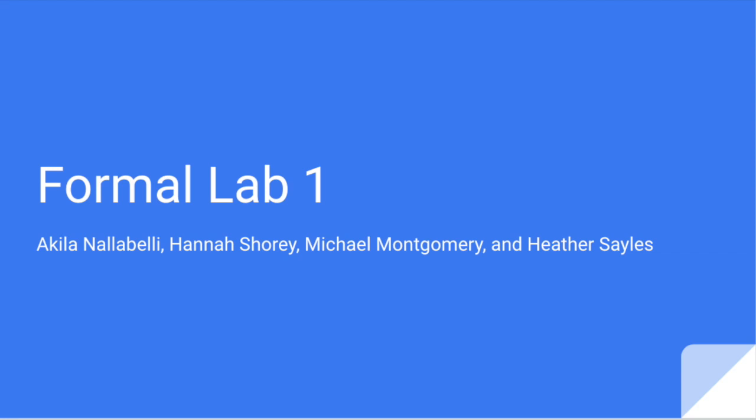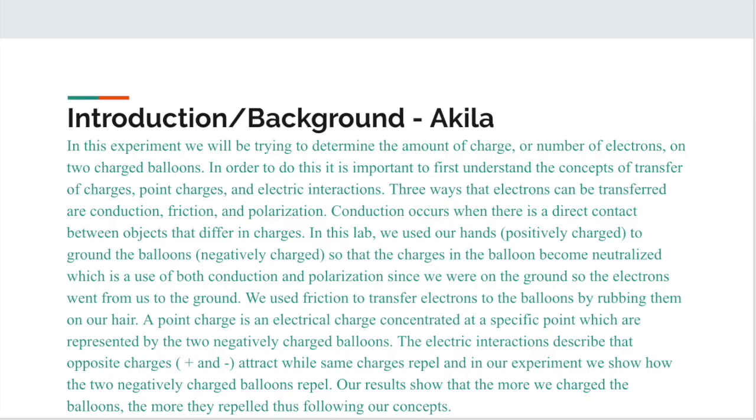This is formal lab one on balloons and charges. In this experiment, we'll be trying to determine the amount of charge or number of electrons on two charged balloons. In order to do this, it's important to first understand the concepts of transfer of charges, point charges, and electric interactions. Three ways that electrons can be transferred are by conduction, friction, and polarization.